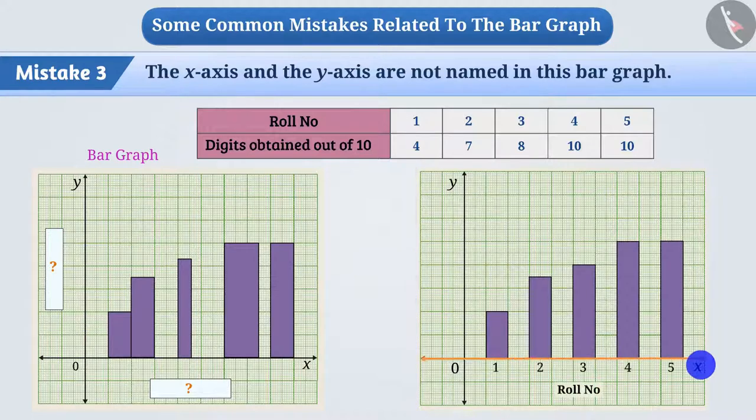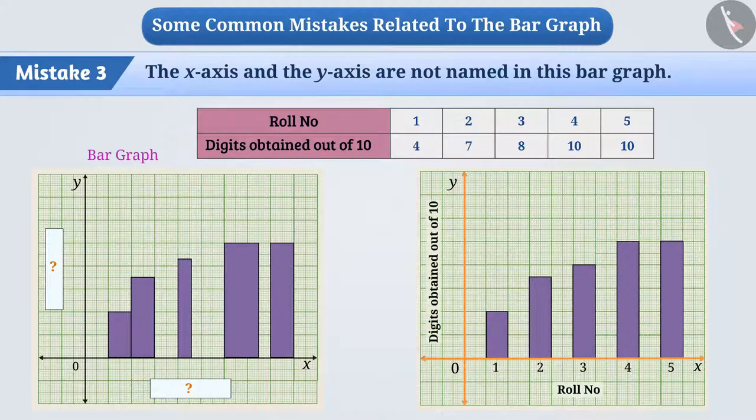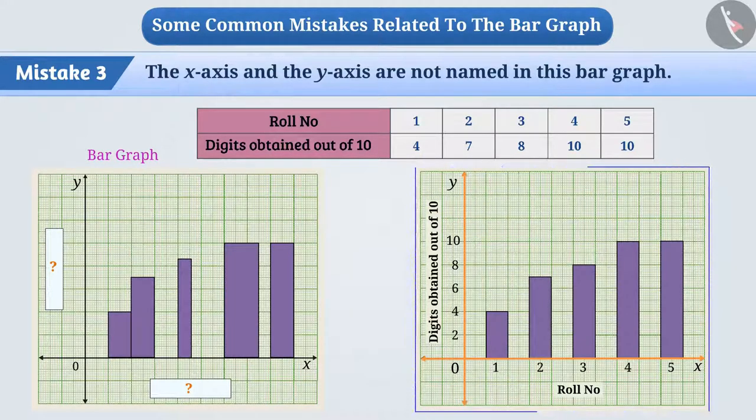Here the roll number on x-axis and digits obtained out of 10 on the y-axis should be written, with the help of which we can read the shown bar graph properly.